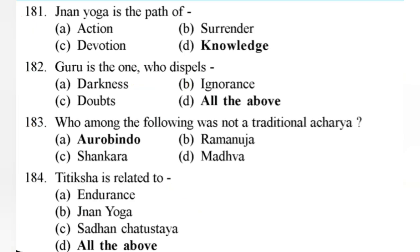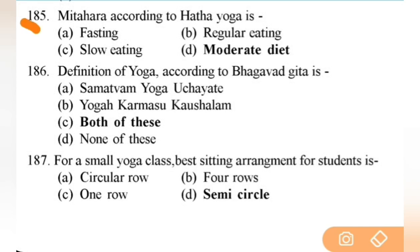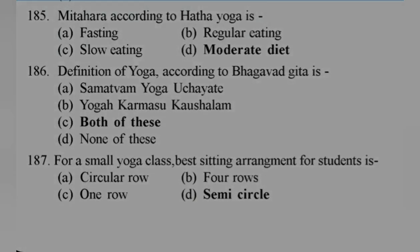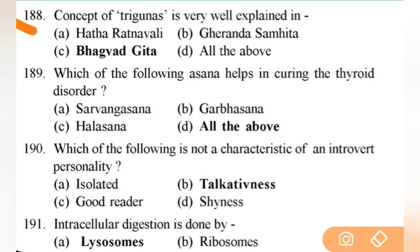Mitahara according to Hatha Yoga is — right answer is D — moderate diet. Next: the definition of yoga according to Bhagavad Gita is both of these — Samatvam Yoga and Yoga Karmasu Kaushalum — important. Next: for a small yoga class, the best seating arrangement is — right answer is D — semicircle. Next: the concept of three Gunas is very well explained in — right answer is C — Bhagavad Gita. Next: which asanas help in curing thyroid disorders? All of the above — Sarvangasana, Halasana, Sarvangasana.